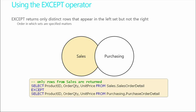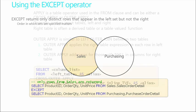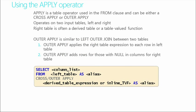The except operator returns only distinct rows that appear in the left set — that is, the first part of a query — but not in the right set. So it's kind of like, using the former example, show me all customers that are not also employees. So a little bit different spin on it, but we're using the same tables, possibly the same columns, and we're accessing the same data, but it's a different result set that we want to work with.